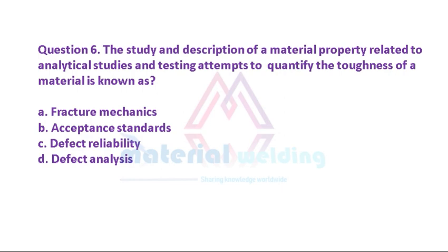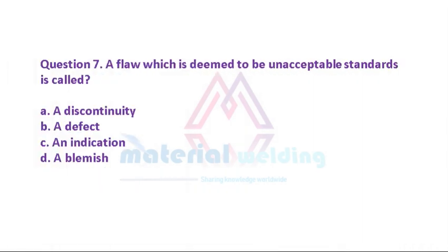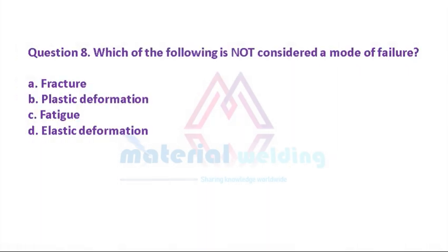Question 6: The study and description of a material property related to analytical studies and testing attempts to quantify the toughness of a material is known as: A. Fracture mechanics. B. Acceptance standards. C. Defect reliability. D. Defect analysis. Question 7: A flaw which is deemed to be unacceptable to standards is called: A. A discontinuity. B. A defect. C. An indication. D. A blemish.